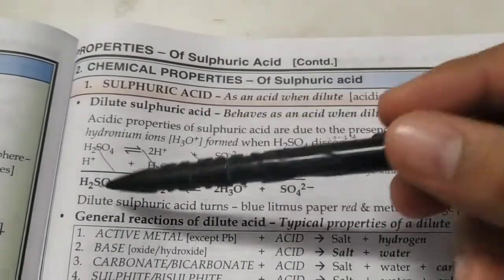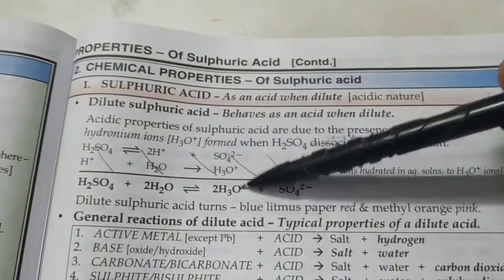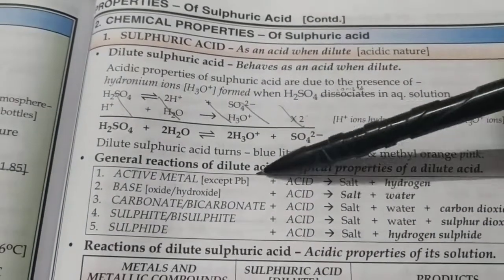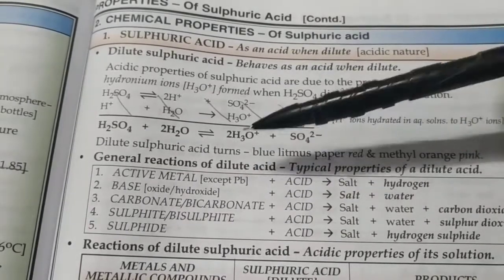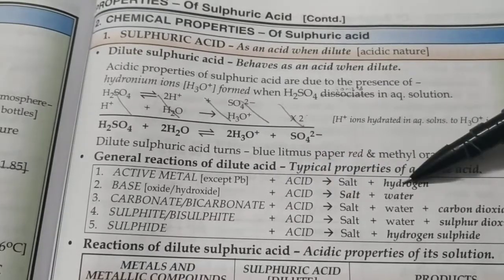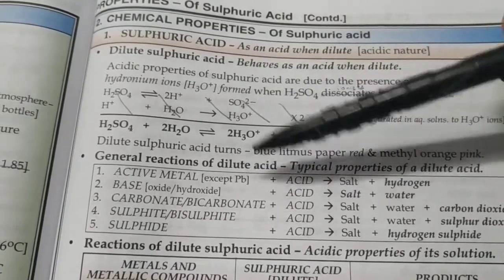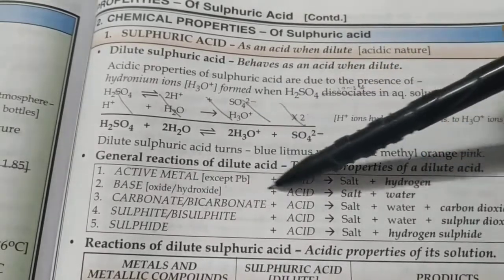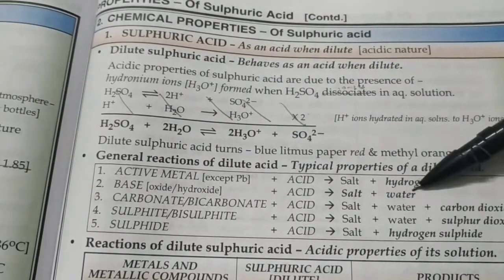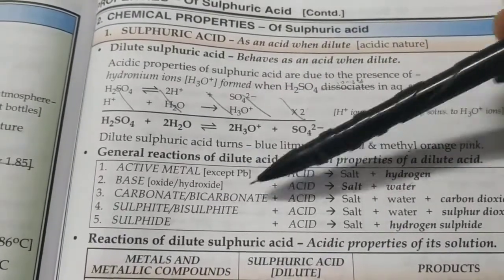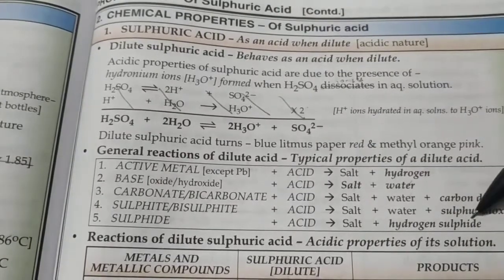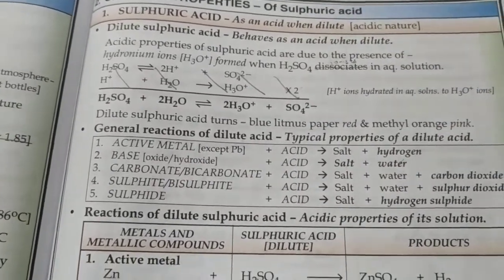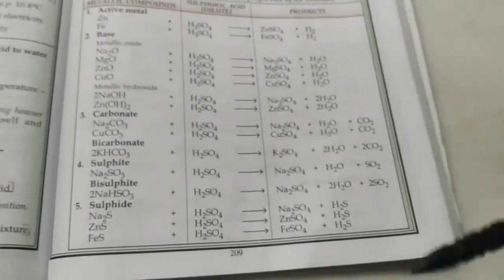Chemical properties: it's a dibasic acid because per molecule when ionized gives two hydronium ions. Dilute acid shows all the typical properties of an acid. With active metals except lead, it will give you hydrogen gas. Lead will not show this because it forms a coating. With base it will give you salt plus water, that's neutralization. Carbonates and bicarbonates will react to give water plus CO2. Sulfite and bisulfite will give SO2, and sulfide will give H2S.